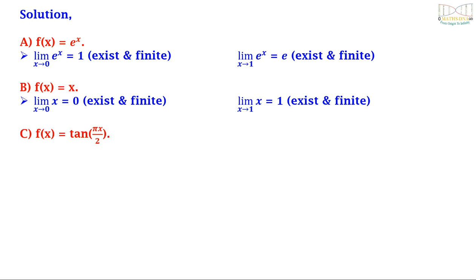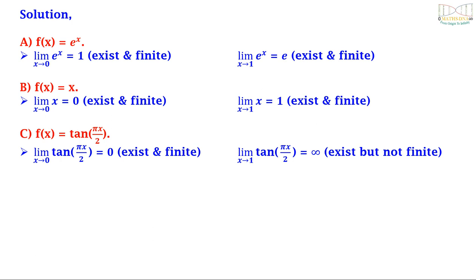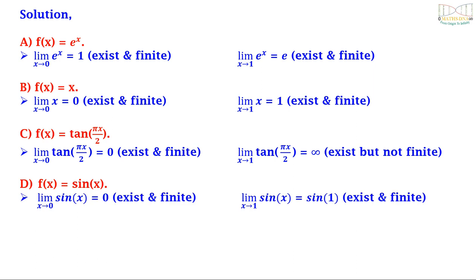For option C, f(x) = tan(πx/2): the limit as x tends to 0 of tan(πx/2) equals 0, which is existing and finite; but the limit as x tends to 1 of tan(πx/2) equals infinity, which exists but is not finite. So option C is not true. For option D, f(x) = sin(x): the limit as x tends to 0 of sin(x) equals 0, existing and finite; and the limit as x tends to 1 of sin(x) equals sin(1), which is also existing and finite.